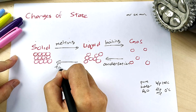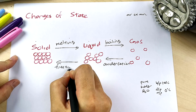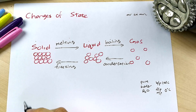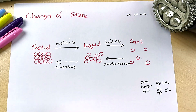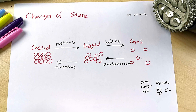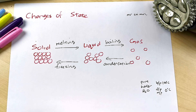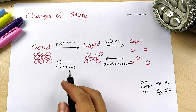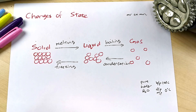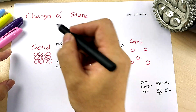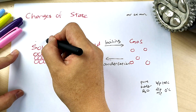Liquid to solid must be freezing. In chemistry we call it freezing. Some physics books write it as solidification, but to be exact, freezing is the correct term here.